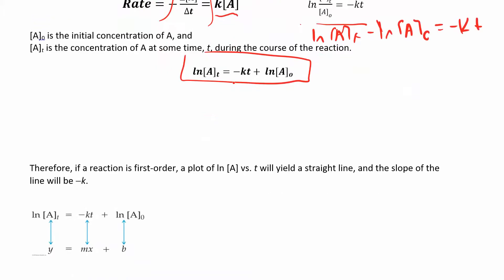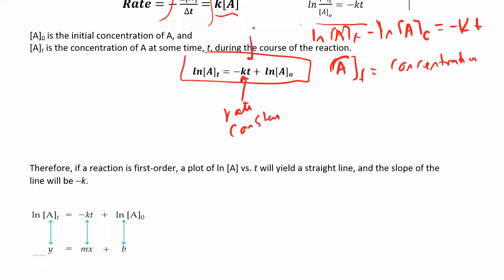The equation we're going to use is: ln[A]_t = -Kt + ln[A]₀. Here, [A]_t is the concentration at some time T. K is your rate constant, just like before. T is time — be careful that if your rate constant is in units of 1/seconds, your time should be in seconds, and if K is in 1/minutes, time should be in minutes. These units need to match so they cancel when multiplied. [A]₀ is your initial concentration.